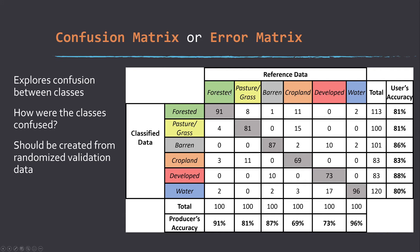Remember that producer's accuracy is a measure of omission error. All these samples outside of the diagonal were supposed to be forested, but they were omitted from the forest class. So again, omission error.